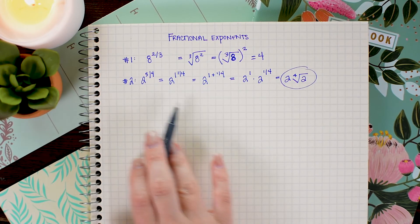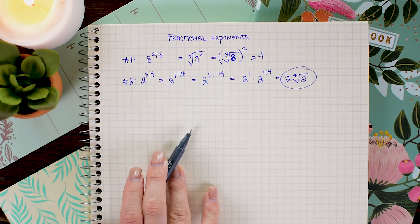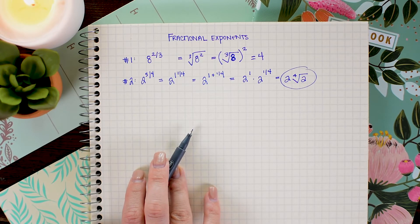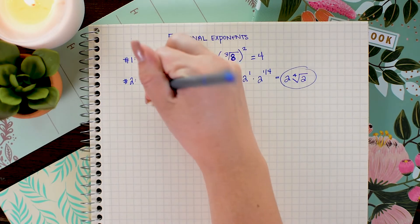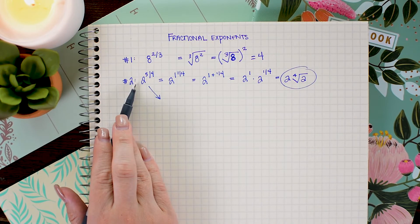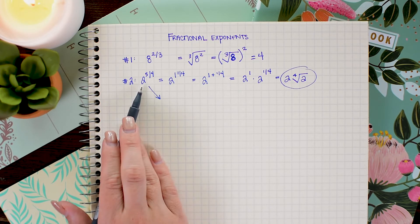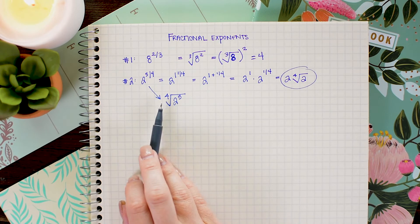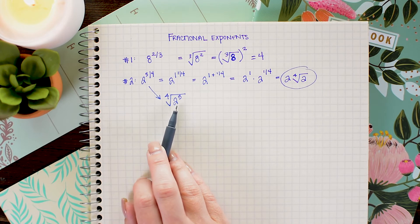Again, we could have done that going directly to radical notation. And why don't I just show you that because really either method is about the same amount of work and it just depends on what clicks with your brain. So the other option is I could have started with this and immediately rewrote it as the fourth root of 2 to the 5th.